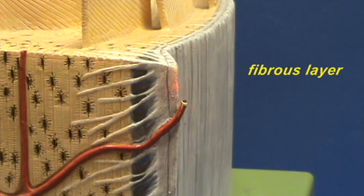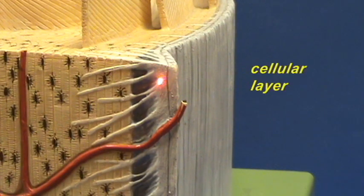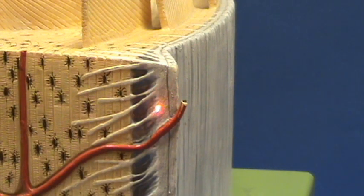So this outermost layer is your tough fibrous layer to which muscles and ligaments would attach. Then inside this fibrous layer, you have a more cellular layer. And so this inner layer would correspond to what is referred to as the osteogenic layer.